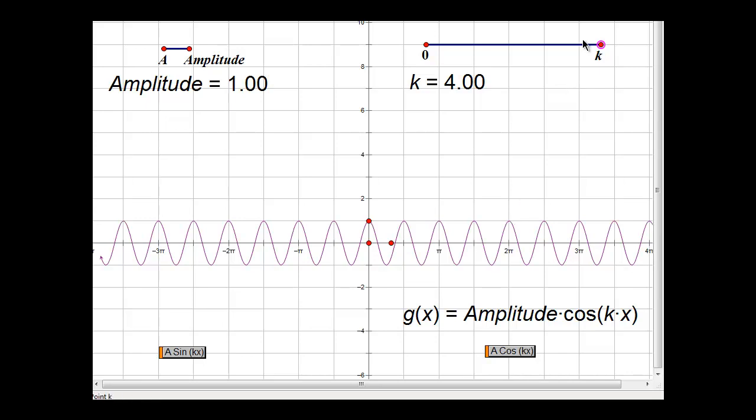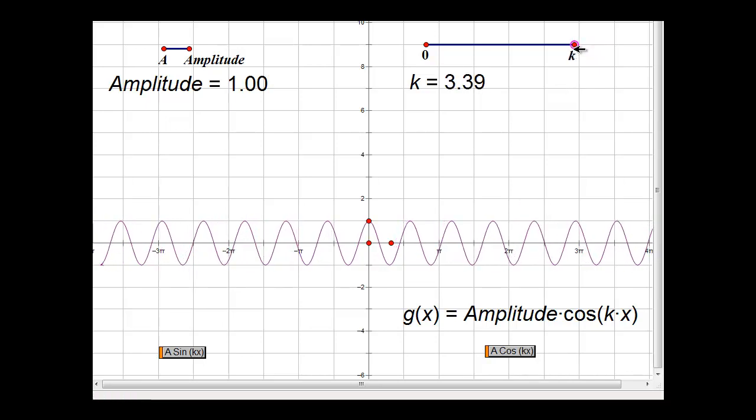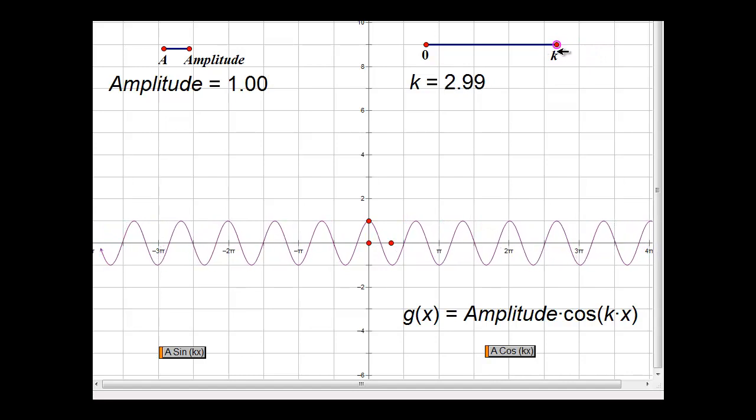If we drop our k value down to 3, you can see that this change stretches our graph out. But between 0 now and 2 pi, you can see that there are three complete cycles of our graph. We have one complete period here, another complete period here, and a final third complete period here. That gives us three periods now within the space of 2 pi, because our k value is 3.